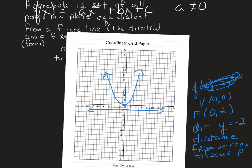The distance from the vertex to the focus is p, and the distance from the vertex to the directrix is also p. So when we're talking about p, that is the distance from the vertex to the focus or the distance from the vertex to the directrix. If we were talking about the distance from the directrix to the focus, that would be 2p.